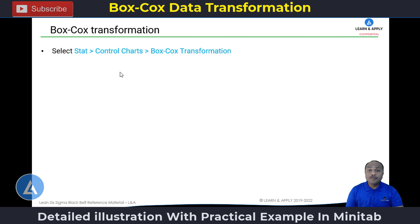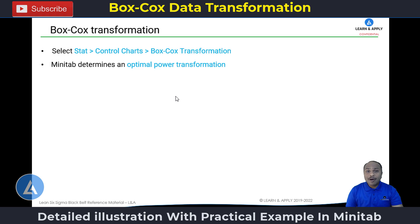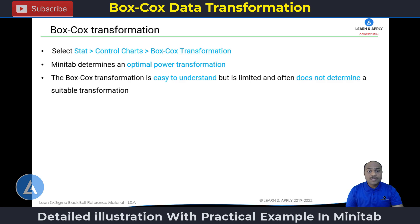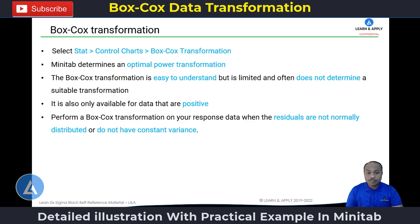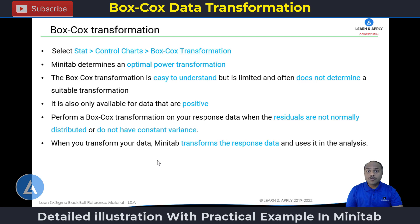Now let's understand the detailed procedure to perform Box-Cox transformation with a practical example in Minitab. To perform the Box-Cox transformation, we need to go to Minitab: Stat, Control Chart, and then Box-Cox transformation. Minitab determines an optimal power transformation when we use the Box-Cox transformation. This transformation is easy to understand but is limited and often does not determine a suitable transformation, and it is only available for positive data. We perform this Box-Cox transformation on response data when the residuals are not normally distributed or do not have constant variance. When we use Box-Cox transformation, Minitab transforms the response data and uses this data for analysis, and that data can be used for easy interpretation of results or to identify relationships between multiple variables.